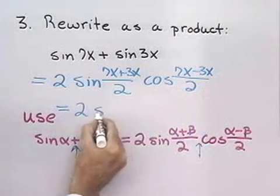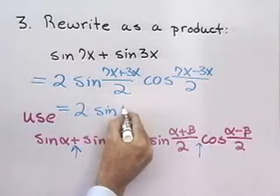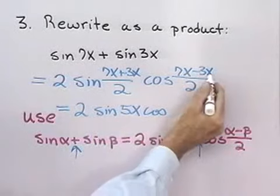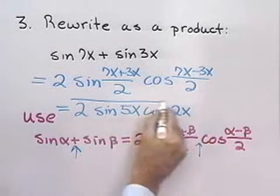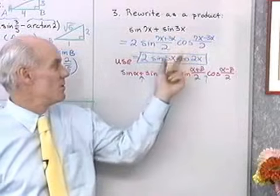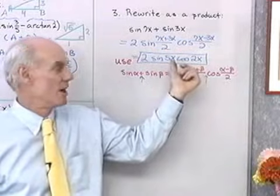And so, that will be 2, sine of 7x plus 3x is 10x divided by 2 is 5x, cosine of 7x minus 3x is 4x divided by 2 is 2x. So, there is the same expression, sine 7x plus sine 3x, rewritten as a product, 2, sine 5x times cosine 2x.